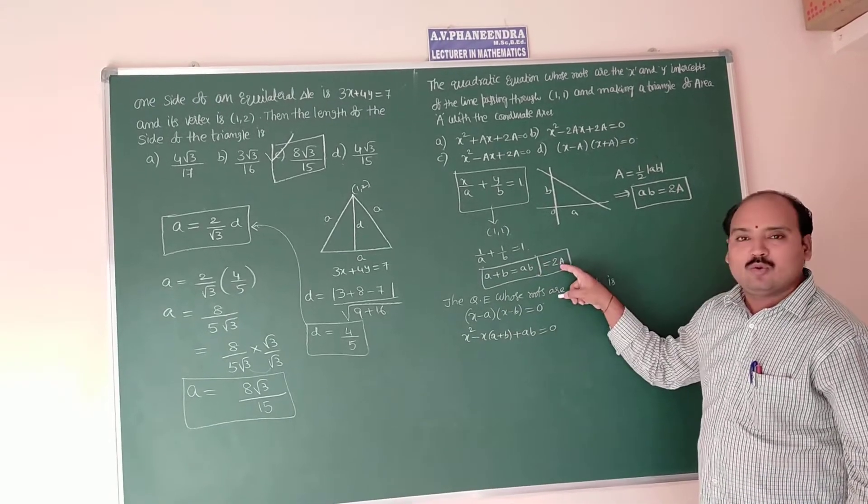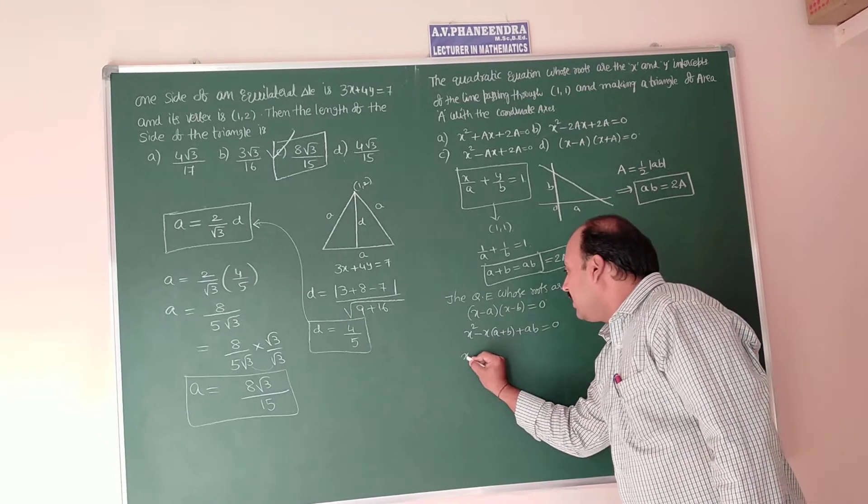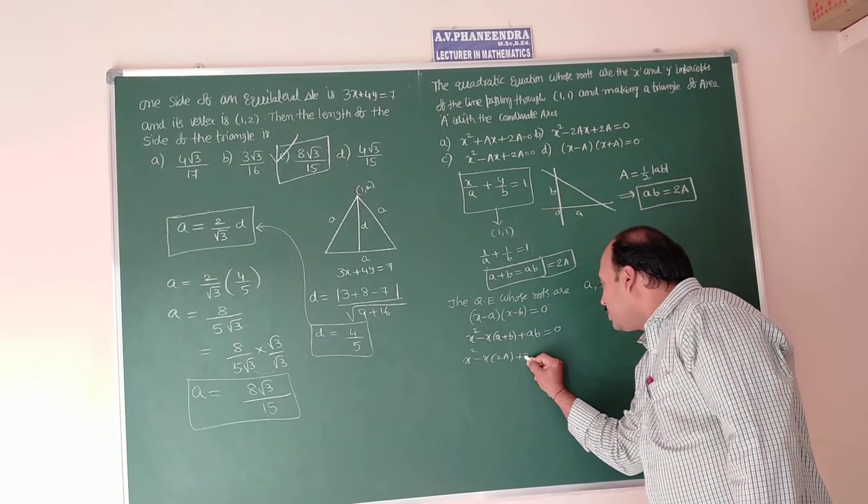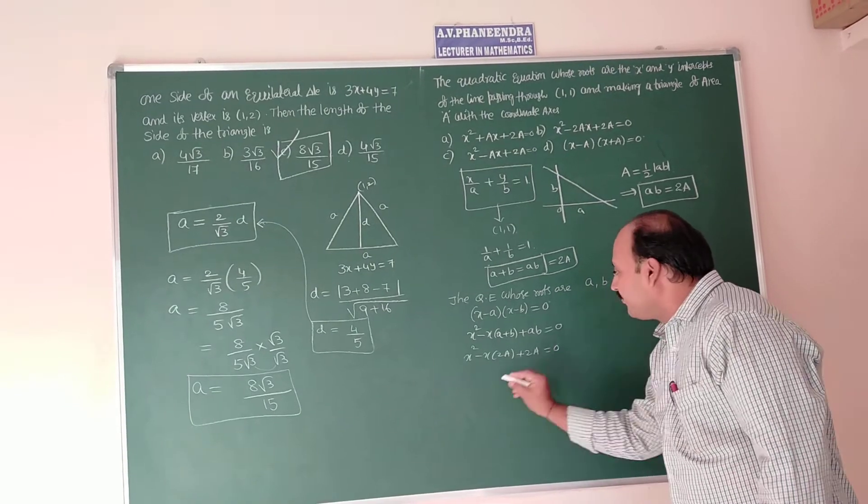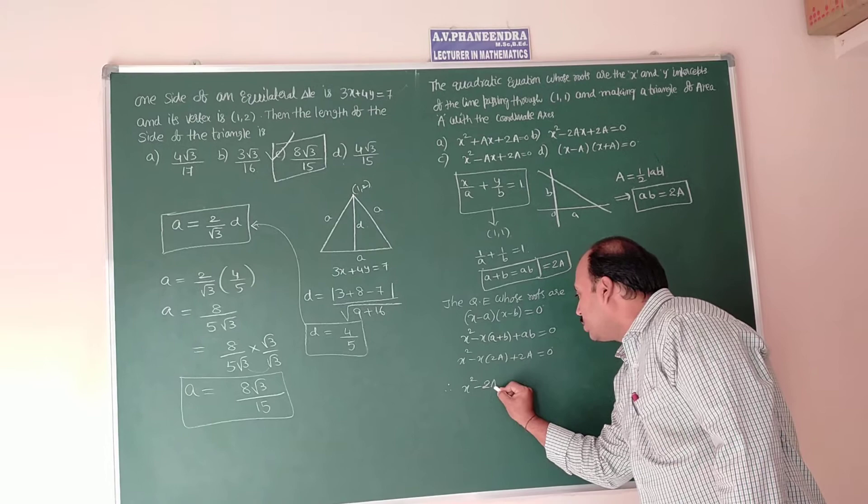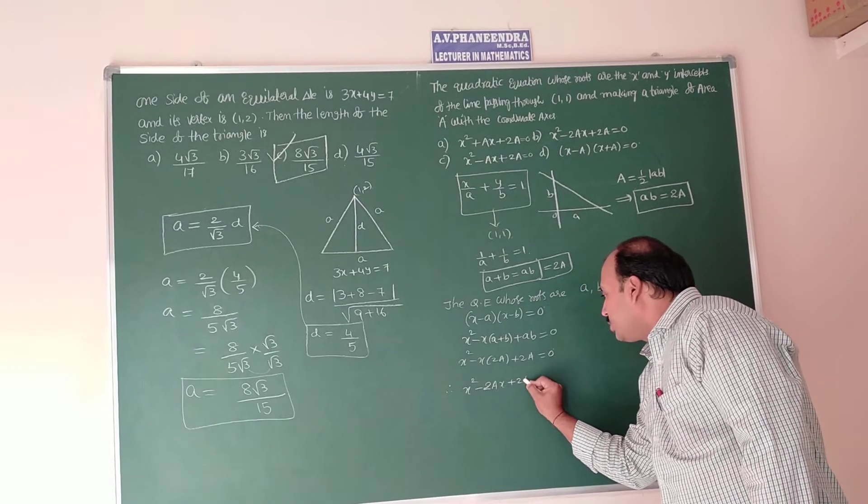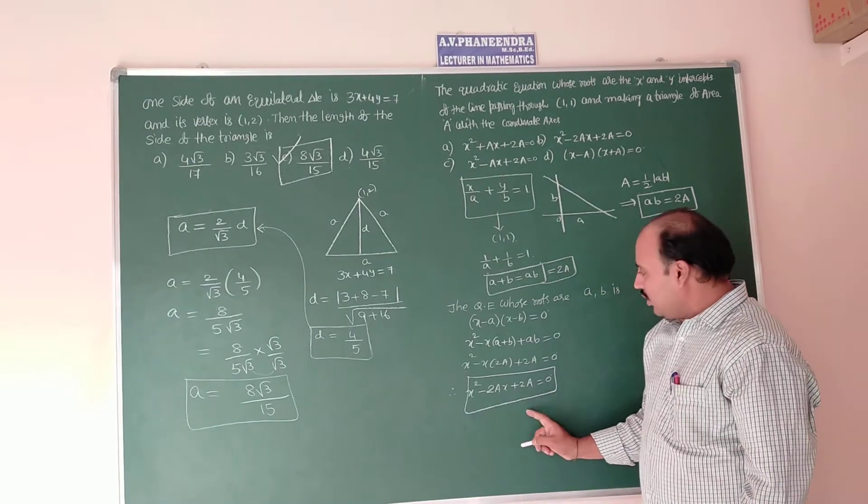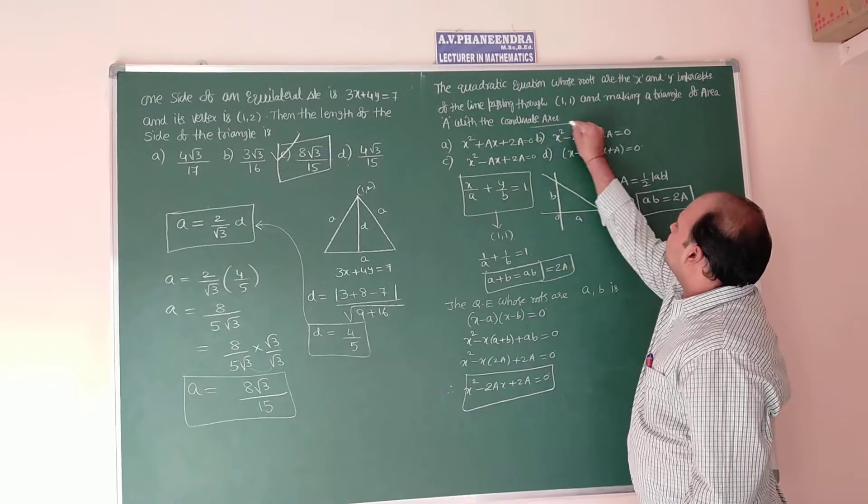So in place of A plus B as well as AB you have to write 2A. It will become x square minus x into 2A plus 2A is equal to 0. Therefore that equation will become x square minus 2Ax plus 2A is equal to 0. This is the required equation which we have to observe in the second option.